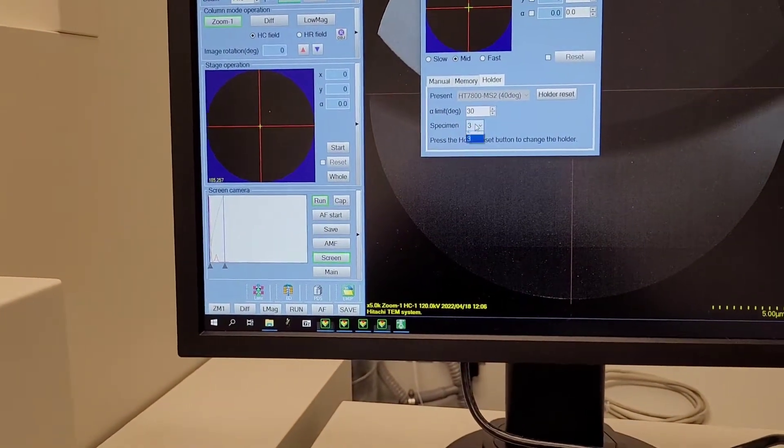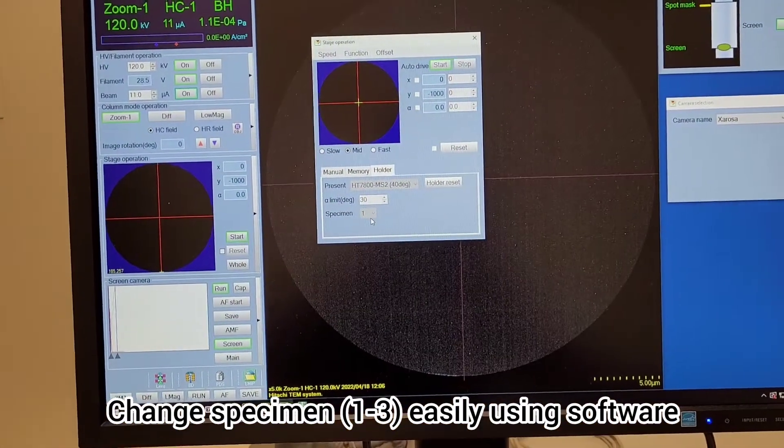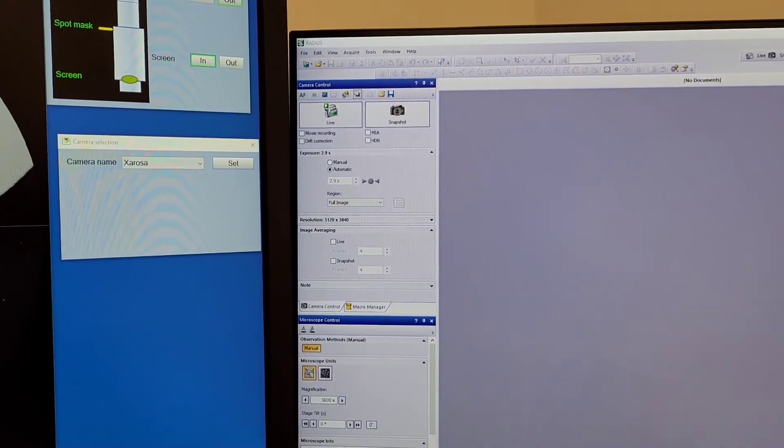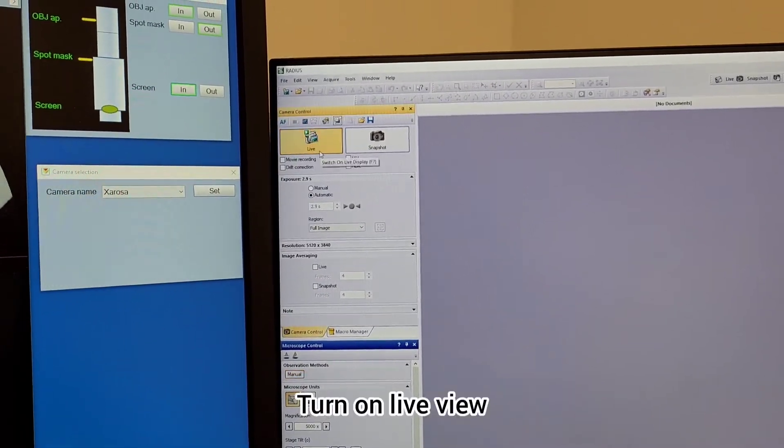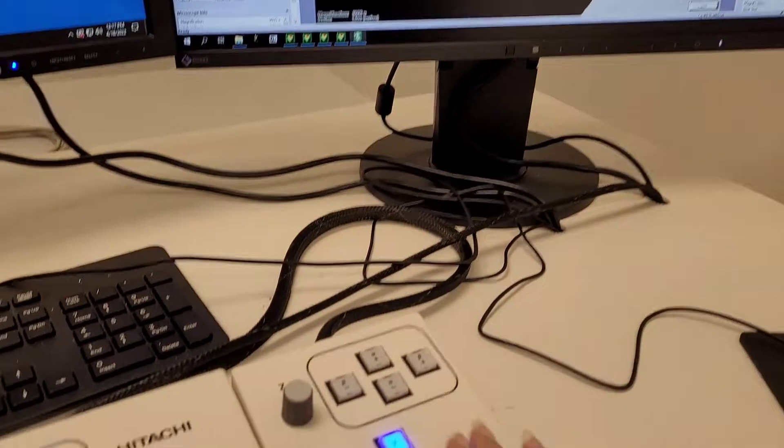But before that, make sure that you're on the right specimen. I will move to specimen one and turn on the live view. You can finally see what is on your grid.